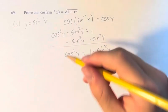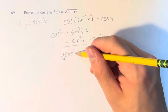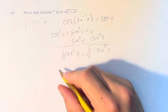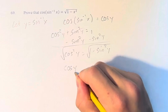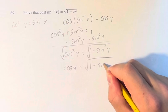And taking the square root of both sides, the square root of cosine squared is just the thing itself, cosine of y. And this is equal to the square root of 1 minus sine squared y.